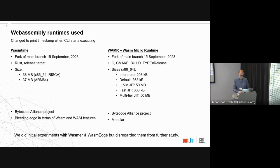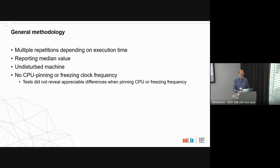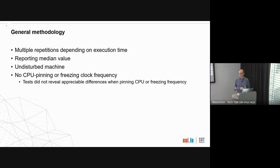We set aside the continued study on Wasmere and Wasm3. Before showing all the graphs, here's the general methodology: we ran all benchmarks with different numbers of repetitions depending on execution time. Long-running programs had one to three iterations; short-running programs had at least 15 iterations, reporting the median value. We made sure they ran on undisturbed machines. We did not do CPU pinning or clock frequency freezing — we tried it a couple of times and didn't see much difference, so for convenience we skipped that.